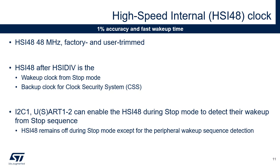The high-speed internal oscillator is a 48 MHz RC oscillator which provides 1% accuracy and fast wake-up times. The HSI48 is trimmed during production tests and can be user-trimmed. The HSI48 can be selected as clock at wake-up from stop mode and as the backup clock if an HSE failure is detected by the clock security system. The HSI48 can be automatically awakened when exiting stop mode to make it available for peripherals when it's not used as the system clock. The USART1, USART2, and I2C1 peripherals can enable the HSI48 oscillator even when the MCU is in stop mode if HSI48 is selected as clock source for one of those peripherals.